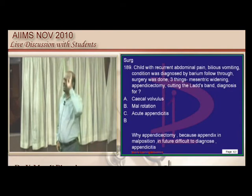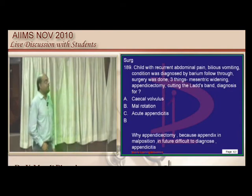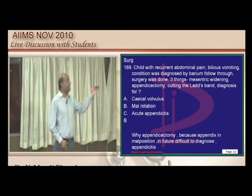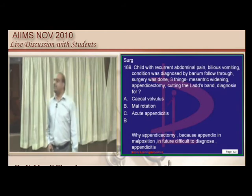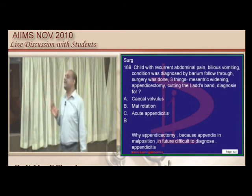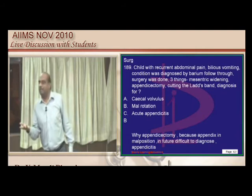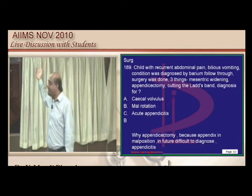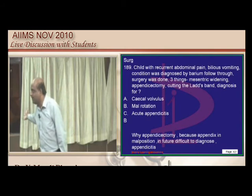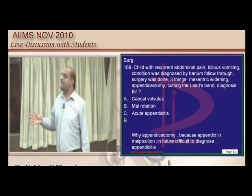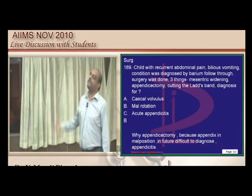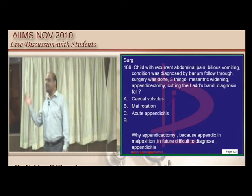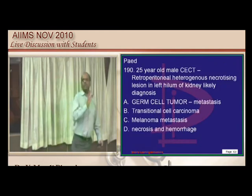A child with recurrent abdominal pain, bilious vomiting, and mesenteric widening found at laparotomy, with appendectomy and Ladd's band resection: this is a classical case of malrotation. In malrotation, appendectomy is done because a malpositioned appendix would be difficult to recognize clinically if it later develops appendicitis, even if the appendix looks normal at the time of laparotomy.